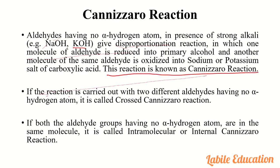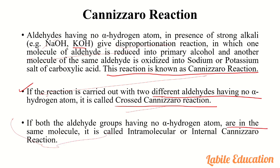If the reaction is carried out with two different aldehydes having no alpha hydrogen atom, it is called a crossed Cannizzaro reaction. If both aldehyde groups having no alpha hydrogen are in the same molecule, that is called an intramolecular or internal Cannizzaro reaction.